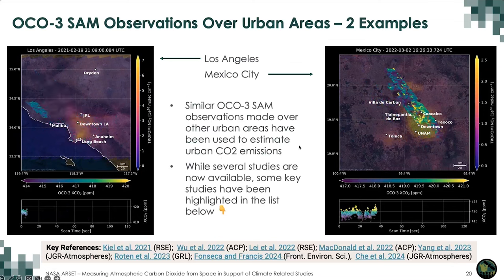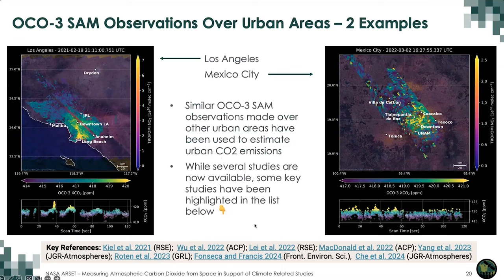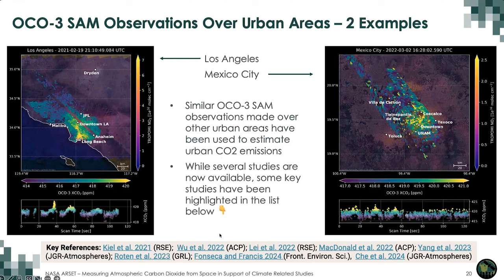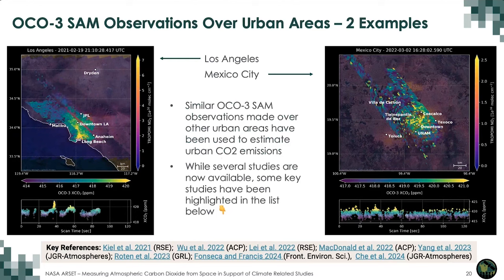These are just two examples, but similar OCO-3 observations have been made over many other urban areas. There is now a whole suite of published studies — I have referenced several here, though it's not a complete list. Emission estimates have been derived for Los Angeles, Mexico City, several cities in China, Paris, Boston, and others. I strongly recommend checking these studies out, as they should also lead you to further research using OCO-3 SAM data.